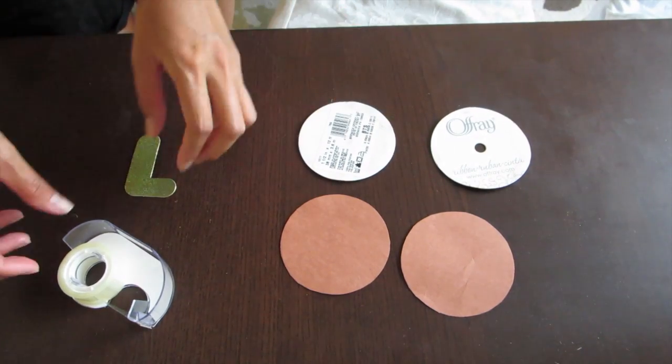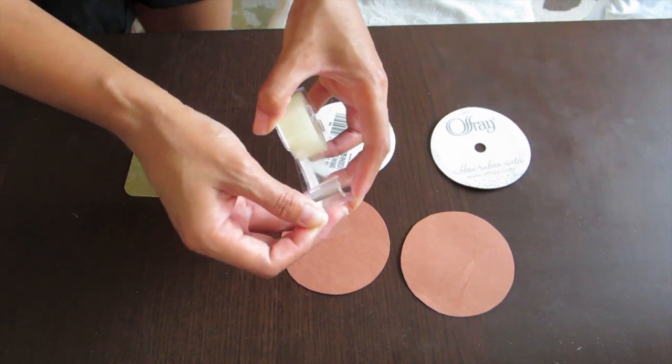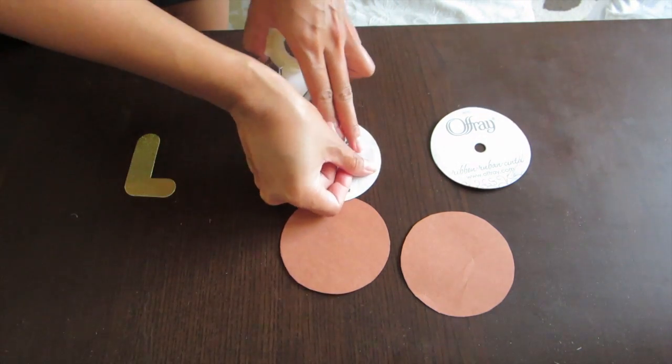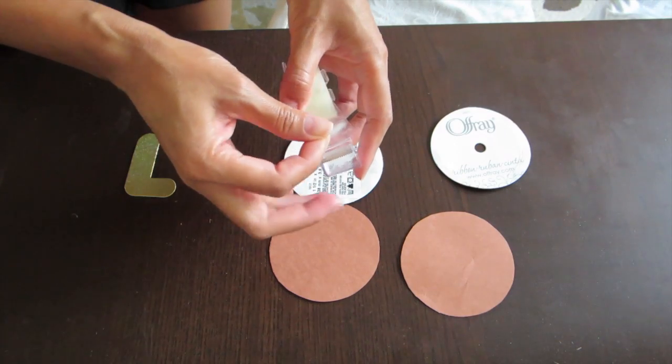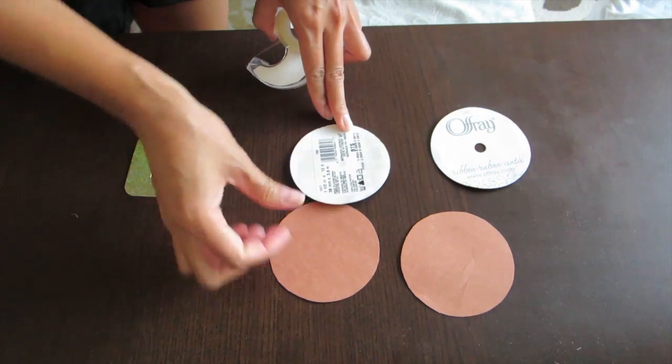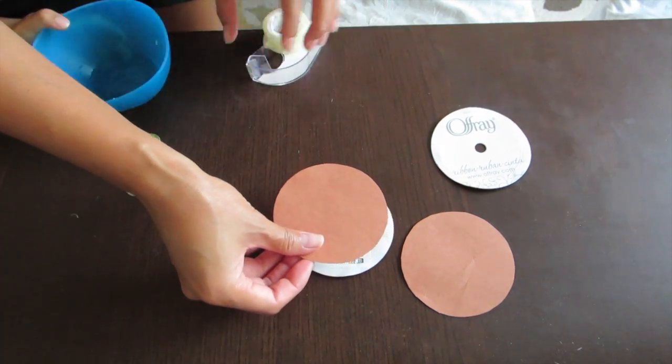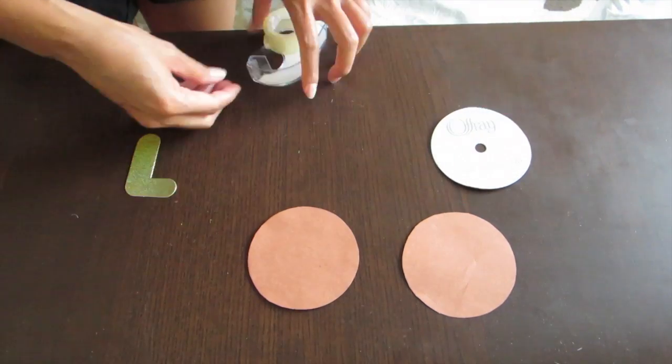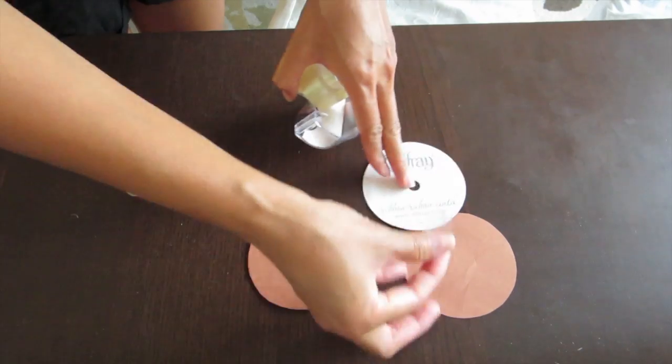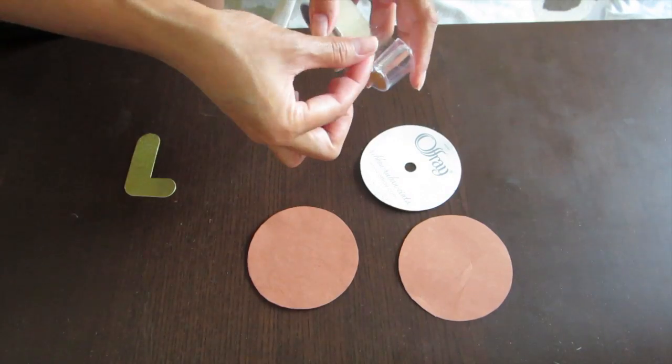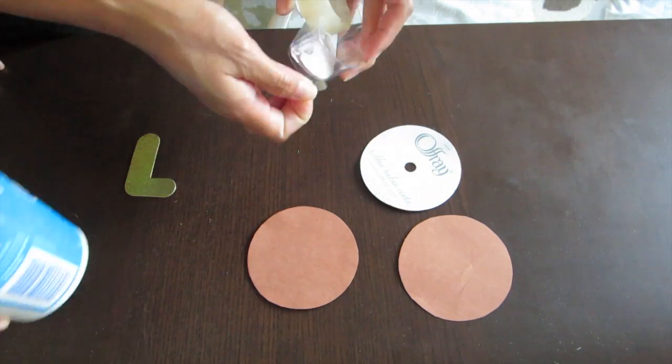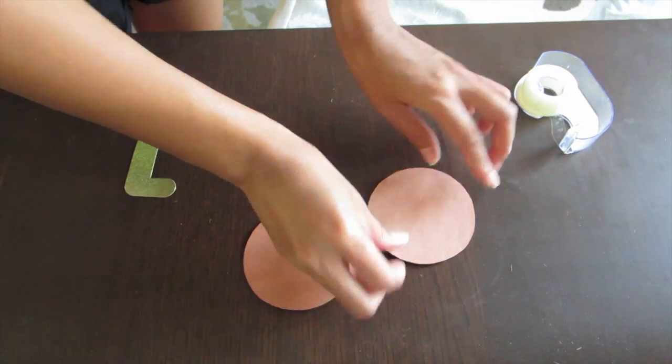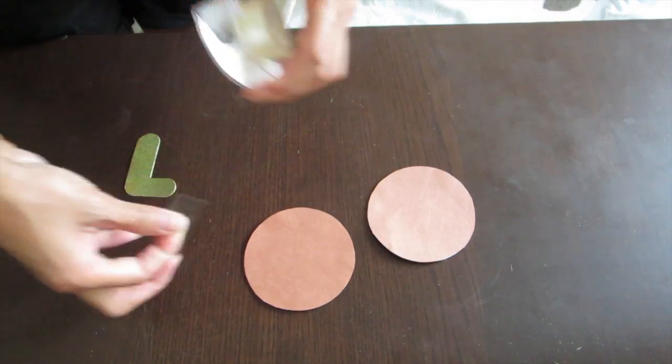Next we're gonna tape it together. Just like so, grab your double-sided tape so we can cover that cardboard because if you just use that brown paper it's a little flimsy so you want it a little harder for your belt buckle.